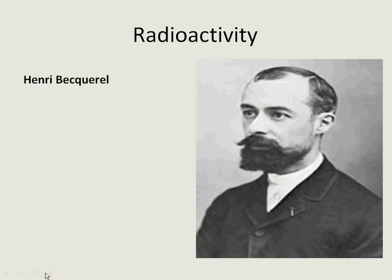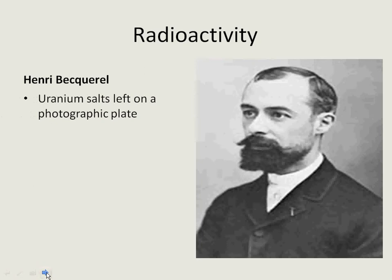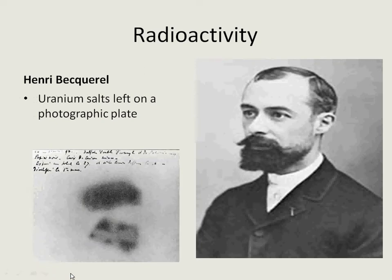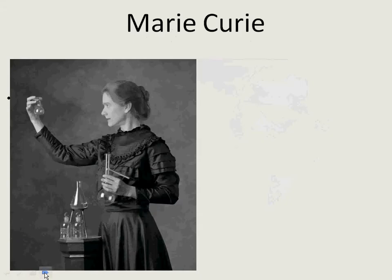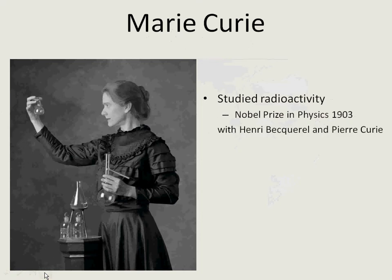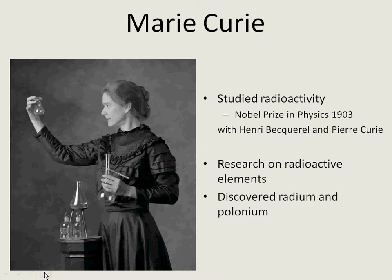Henry Becquerel was the first to discover radioactivity. He left some uranium salts on a photographic plate, and when he looked at it the next morning, he saw that the plate had been fogged and didn't know how that happened. He went on to study radioactivity, as did Marie Curie. Becquerel, Marie Curie, and her husband Pierre Curie received the Nobel Prize in Physics in 1903. Marie and Pierre continued their study of radioactive elements, and she went on to discover two more elements: radium and polonium, which were radioactive.